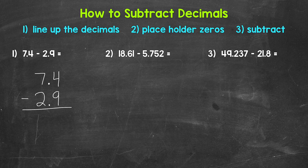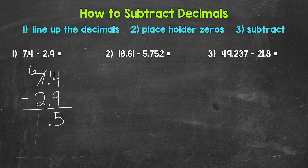So now we just subtract, starting with the tenths place. We have 4 minus 9, which we are going to need to borrow here. So we borrow from the 7 — this is now 6 — and we end up with 14 minus 9, which gives us 5. Then we bring the decimal straight down into the answer. The decimal is going to be lined up throughout the entire problem. Then we move over to the ones place, where we have 6 minus 2. That gives us 4. This is our final answer: 4 and 5 tenths.